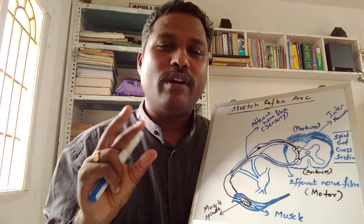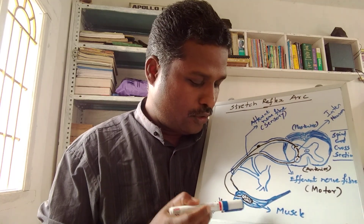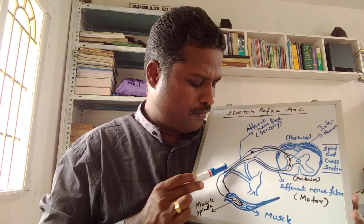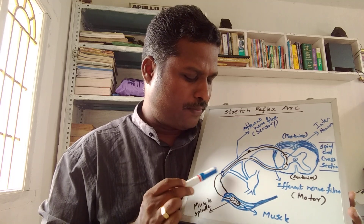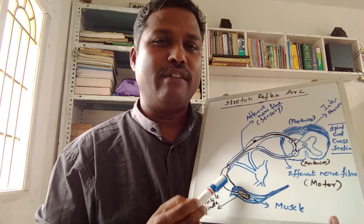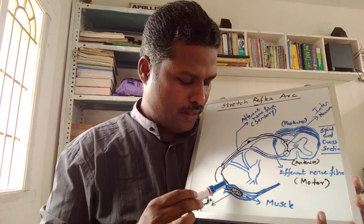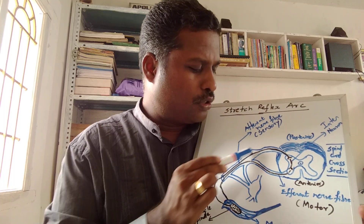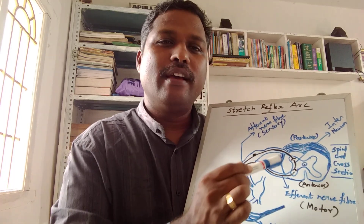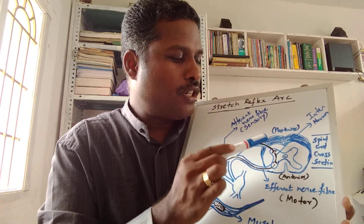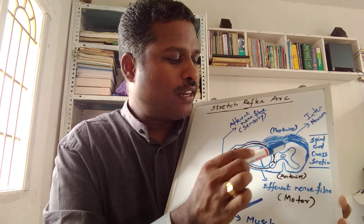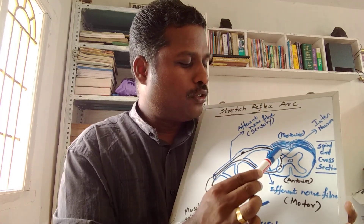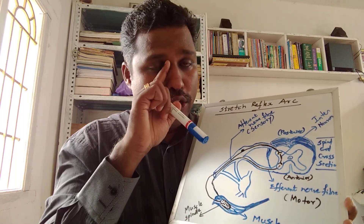Every muscle will have muscle spindles — a group of specialized muscle fibers. Their function is to constantly monitor the tension taking place within the muscle. That tension is perceived by the muscle spindle, which takes the information through the nerve. The nerve — shown here in black — always has a sensory fiber and a motor fiber. While it is taking the information toward the spinal cord it is called the afferent nerve fiber, which is the sensory nerve fiber. It goes to the spinal cord, shown here as a cross-section with H-shaped gray matter.